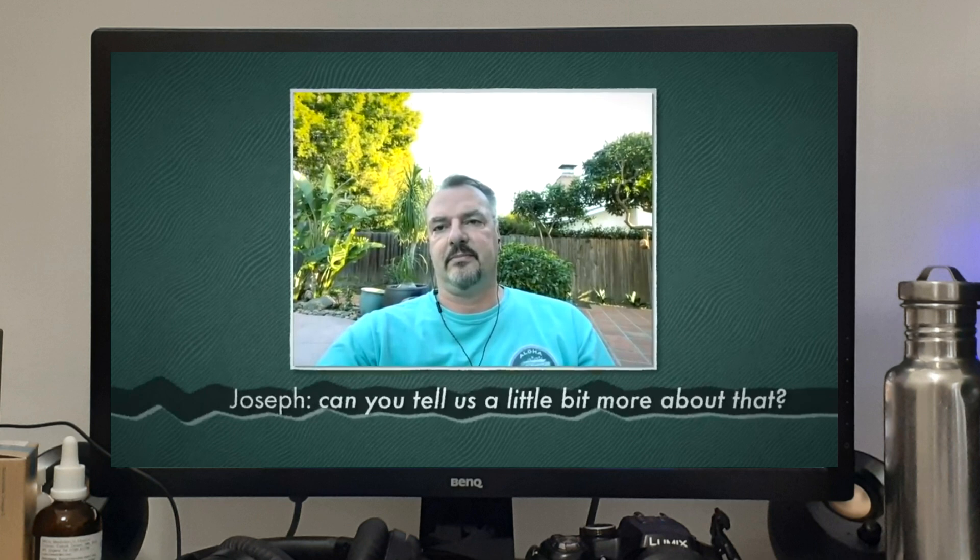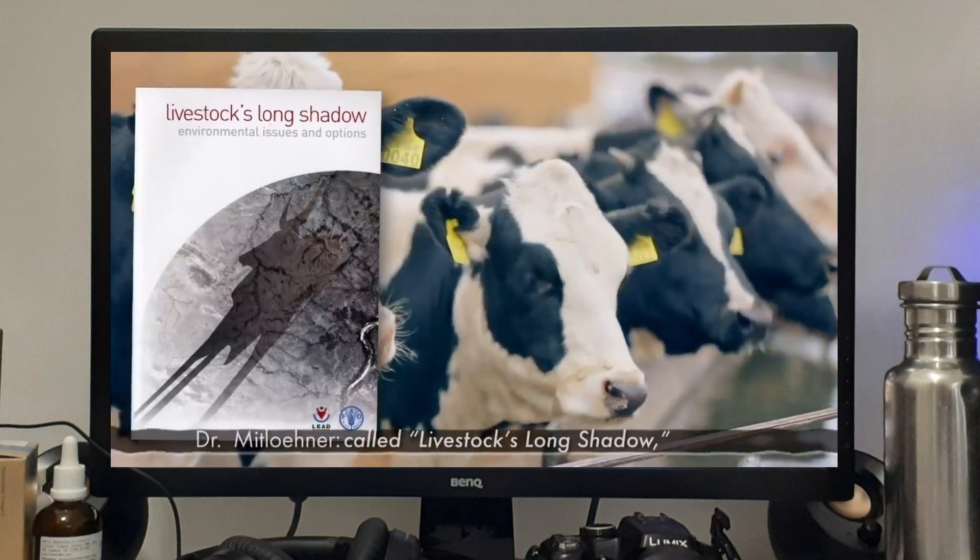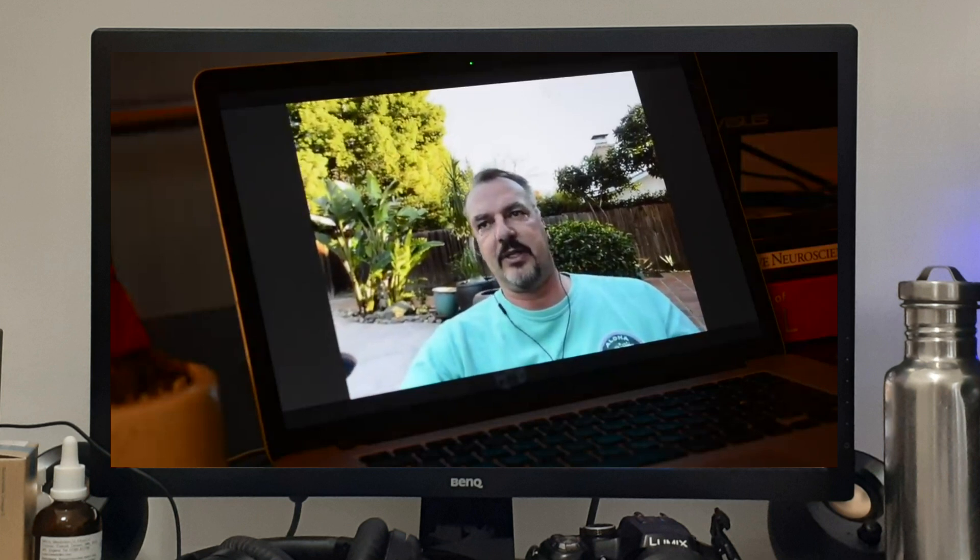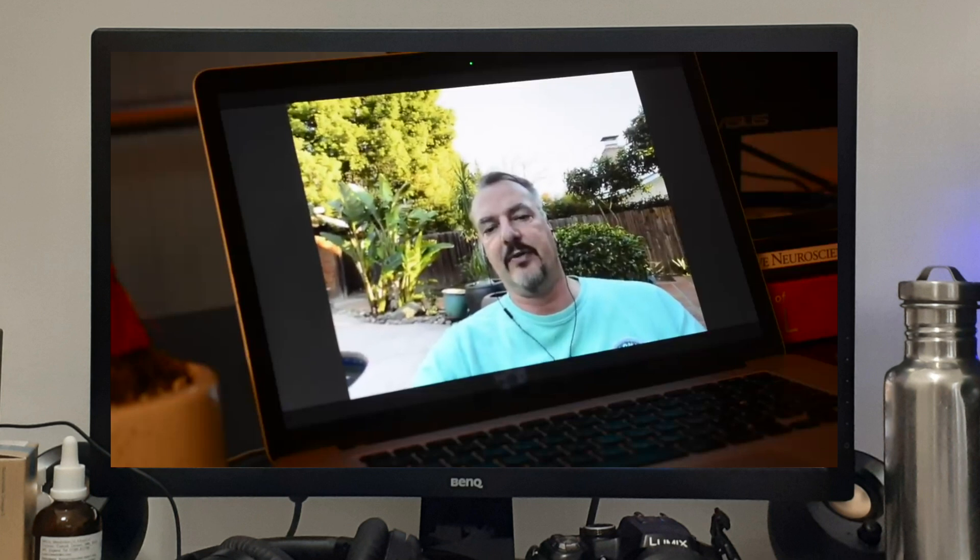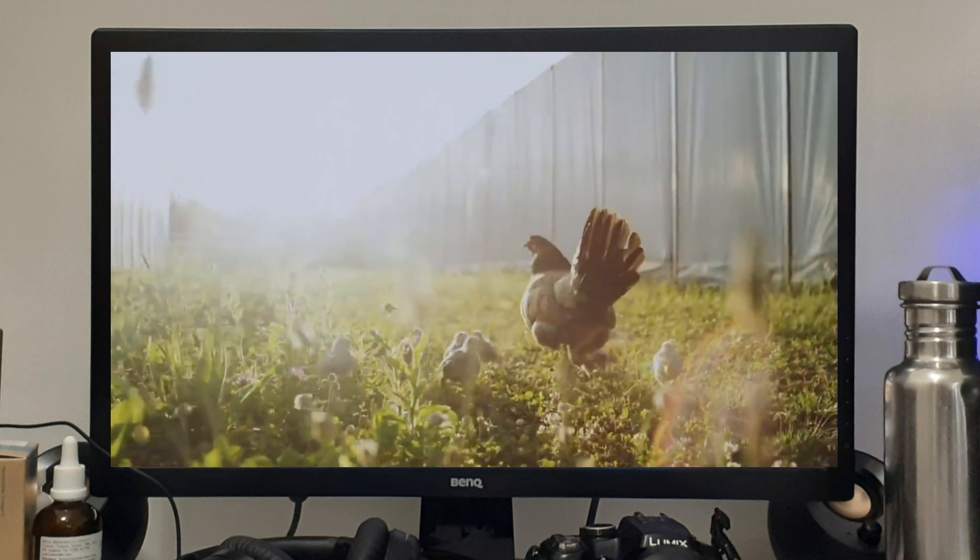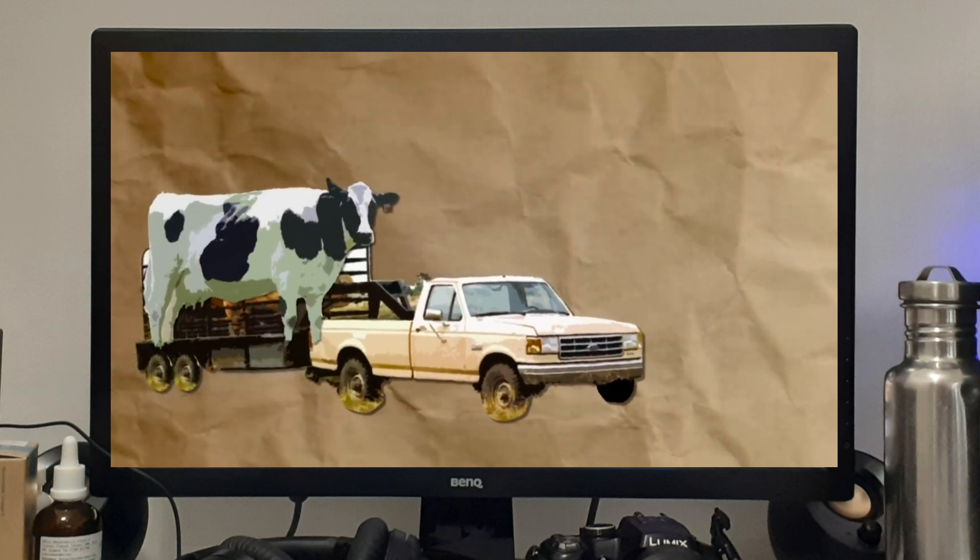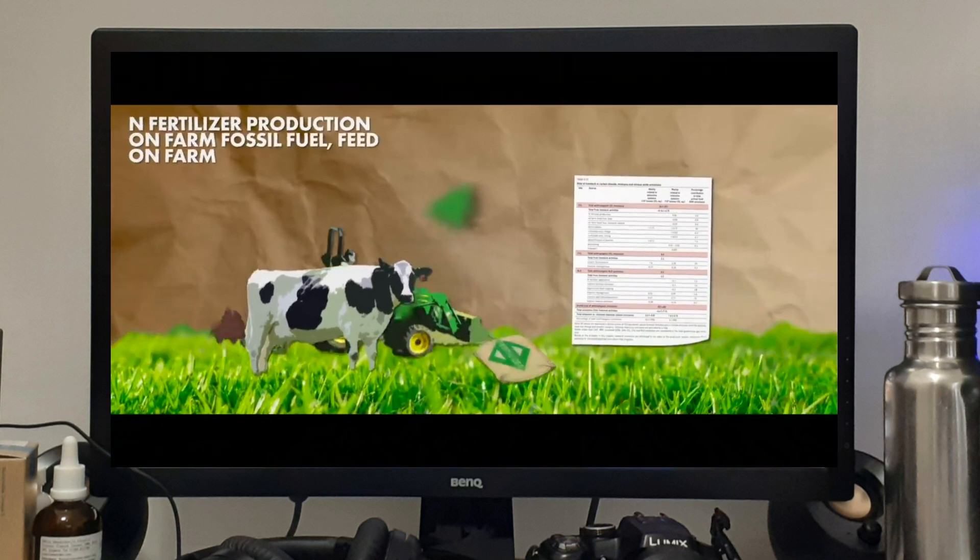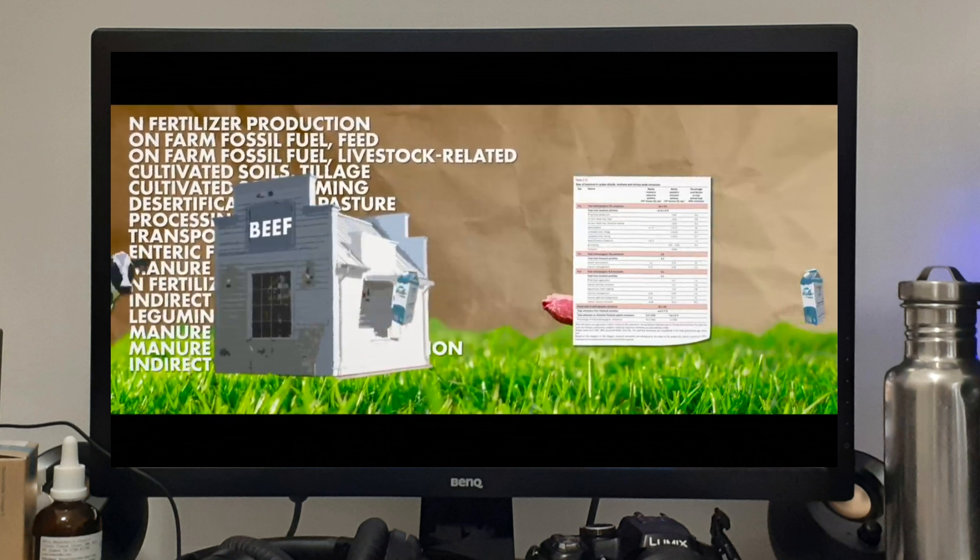My understanding is that the idea that cows are bad for the environment started sometime around 2006 when this report called Livestock's Long Shadow came out. First of all the FAO wrote a report called Livestock's Long Shadow. Some aspects of the report were done very well and some of them were done chop-chop. They had some snappy comparisons in there such as the one comparing livestock to transportation. The problem was that while they used this comprehensive cradle to grave life cycle assessment approach for livestock, they looked at everything from soil to plants to animals, the belching, the manure, the feed, the processing of meat and milk, all the way until you put it in your mouth.